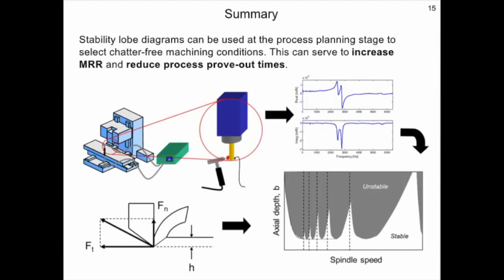To summarize, we've learned that stability lobe diagrams can be used at the process planning stage in order to select chatter-free machining conditions. The requirements are the tool point frequency response function and the cutting force model through cutting force coefficients. Given this information and the stability lobe diagram, you can increase material removal rates and reduce the process proof-out times for new machining operations.